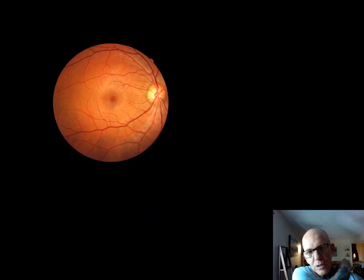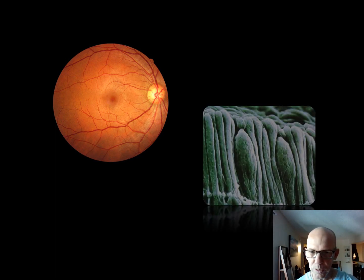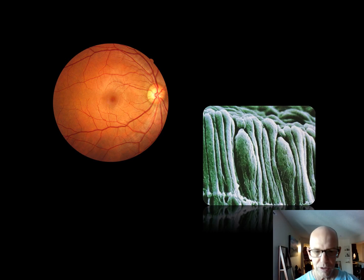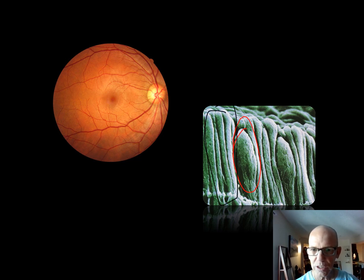Looking at the fovea from the back of the eye: the center is almost all cones. The rods live out on the periphery — on the donut part at the edges. In an electron microscope image, you can actually see the cones are fat and short, while the rods are tall and skinny.